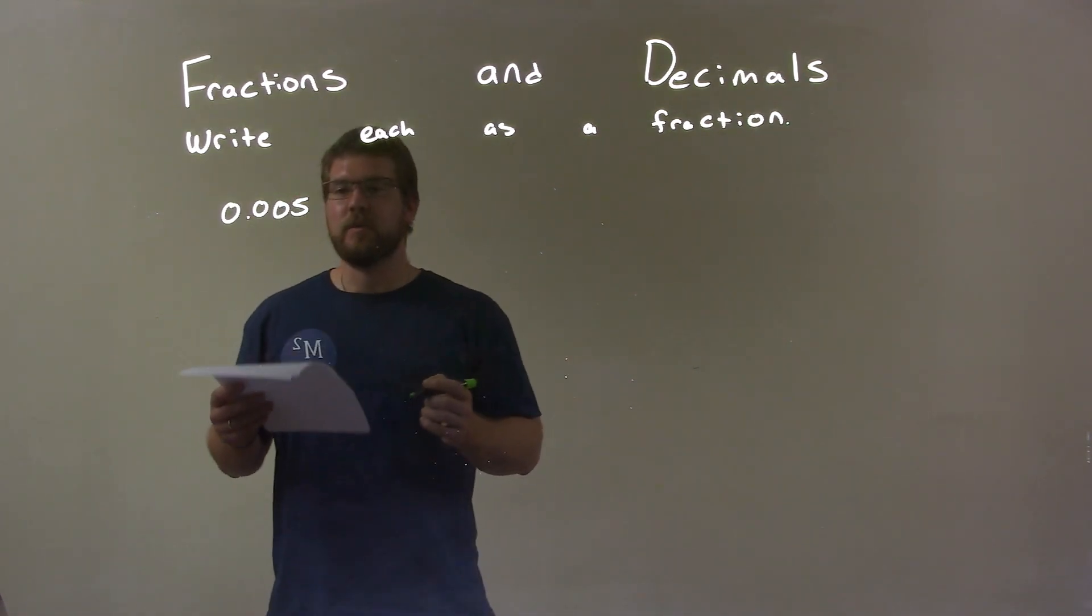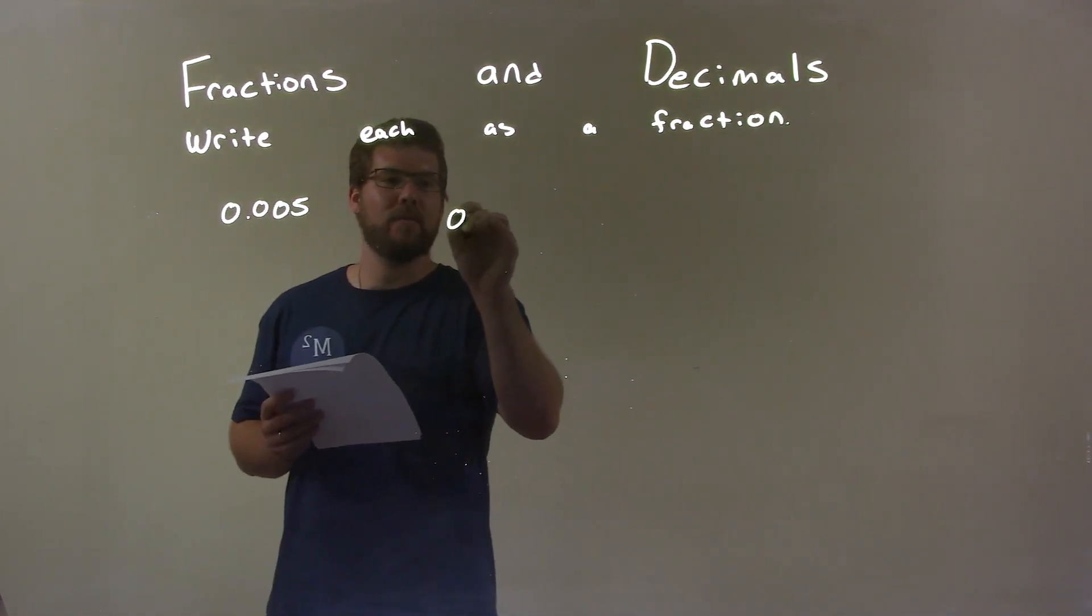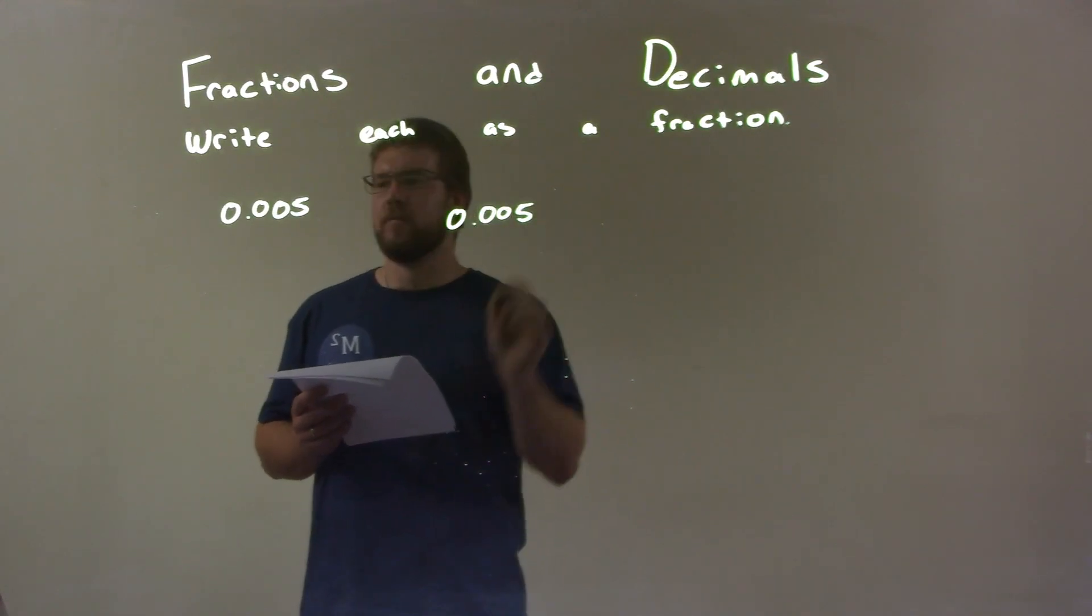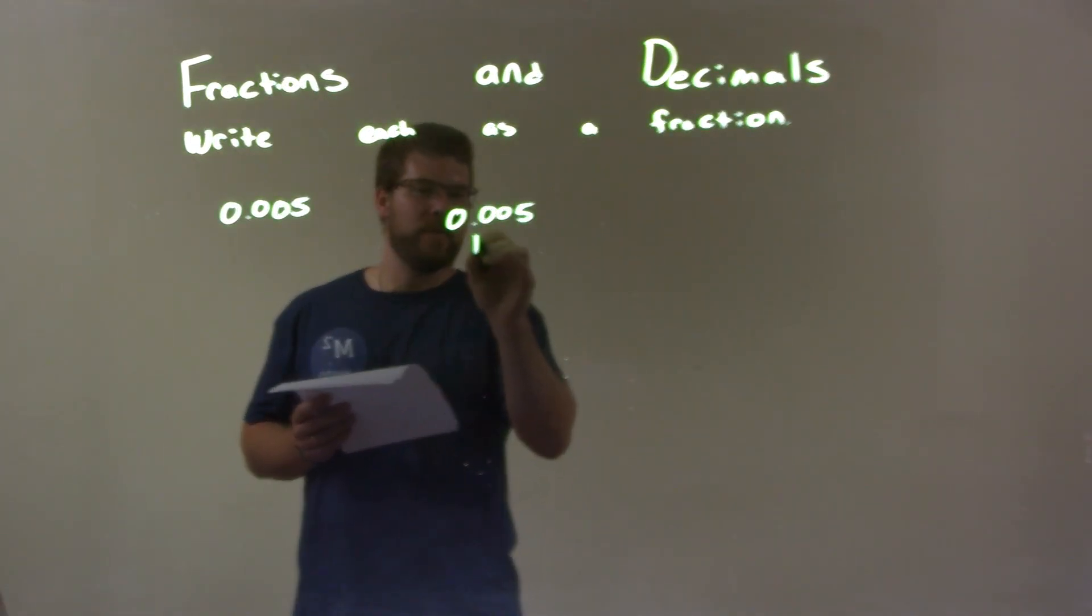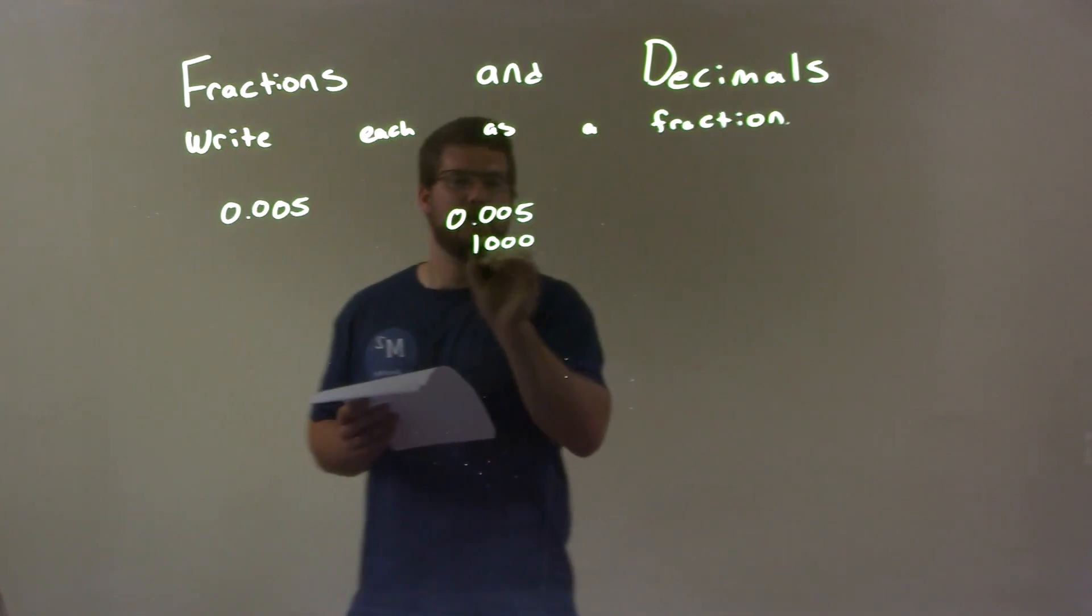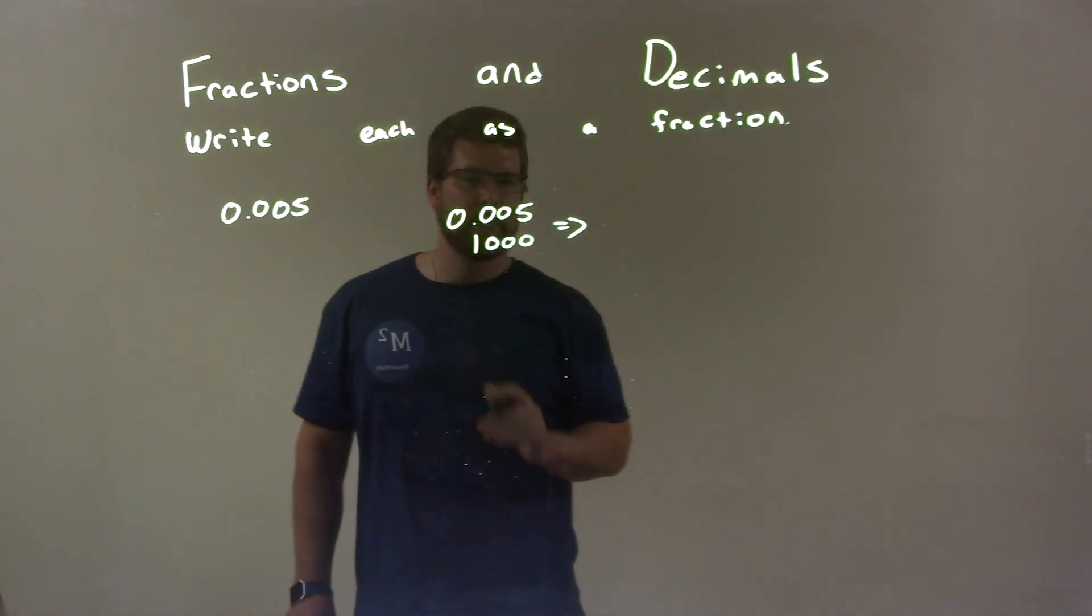0.005, the way I like to write this, I'm going to write it again, 0.005. I'm going to put a 1 underneath the decimals and put 0, 0, 0 until we get to the 5. And that lets me know